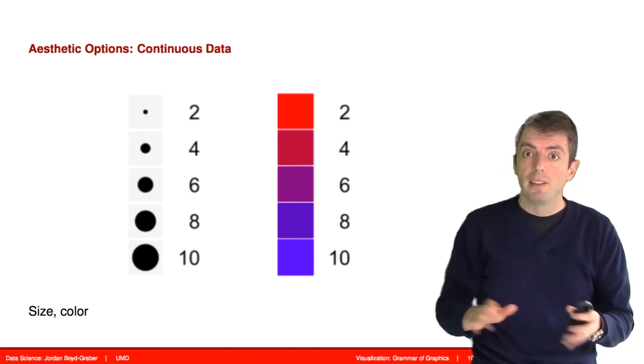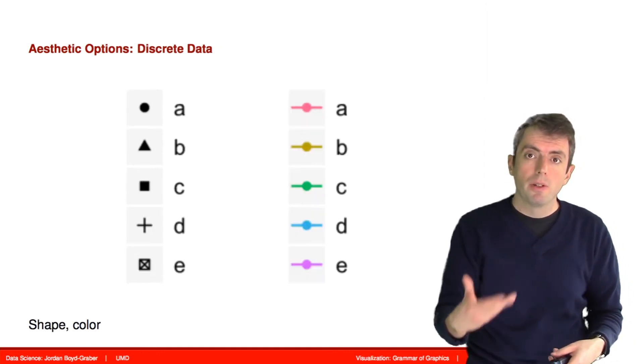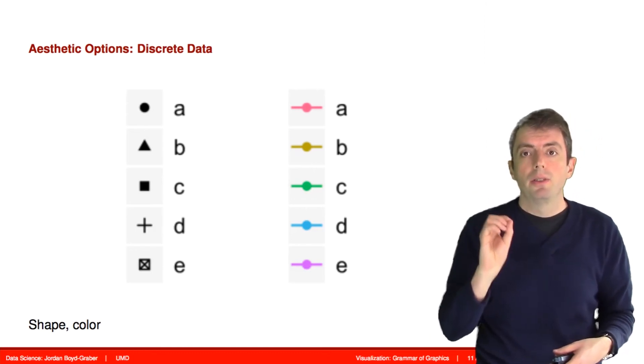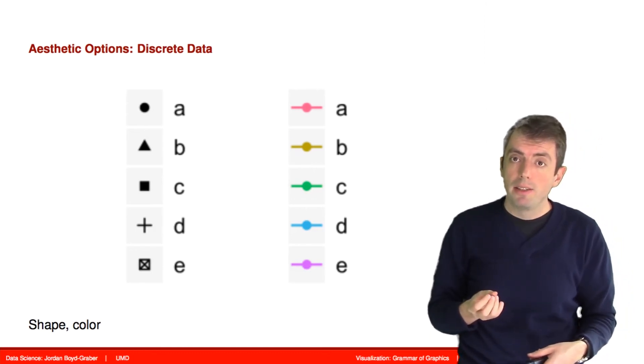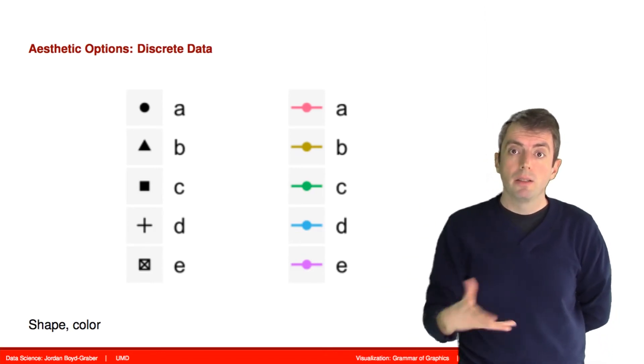You can also do similar things for discrete data. For example, you can have different shapes associated with different categories of data or different colors. Here, if you associate a color with discrete data, it does something very sensible.